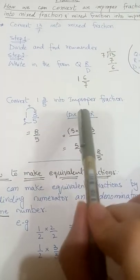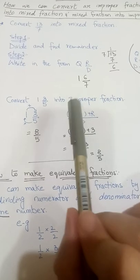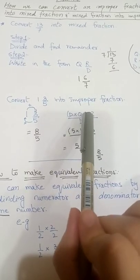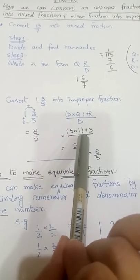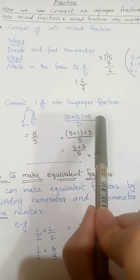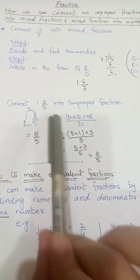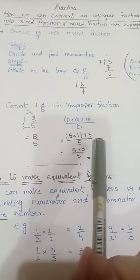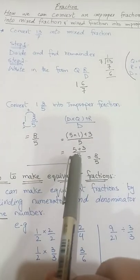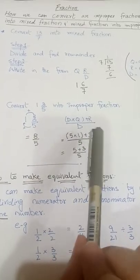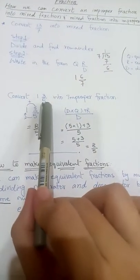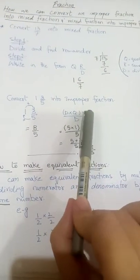If you want to learn the substitution method, we substitute the values: instead of D we write 5, instead of Q we write 1, and R is the remainder which is 3. So 5 multiplied by 1 is 5, plus 3 is 8, giving us 8 upon 5. This is how we can convert a mixed fraction into an improper fraction.